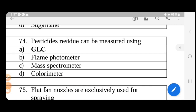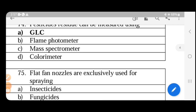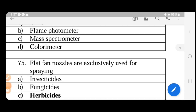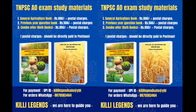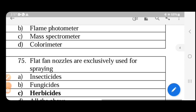Pesticide residue can be measured using the GLC method. GLC stands for Gas-Liquid Chromatography, and it is the most commonly used pesticide residue analysis method. A flame photometer can also be used for determining certain pesticide residues.